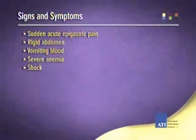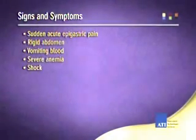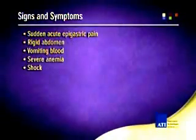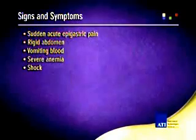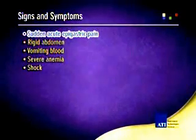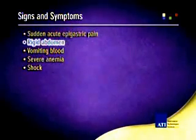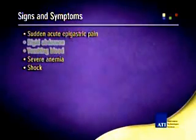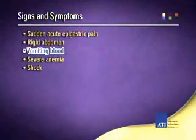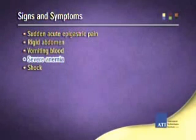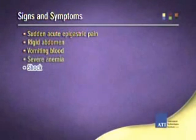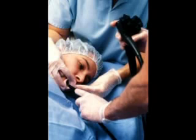Signs and symptoms that indicate the need for a gastrectomy include sudden acute epigastric pain, a rigid abdomen, vomiting blood, severe anemia, and shock. A gastroscopy will verify the need for a gastrectomy.